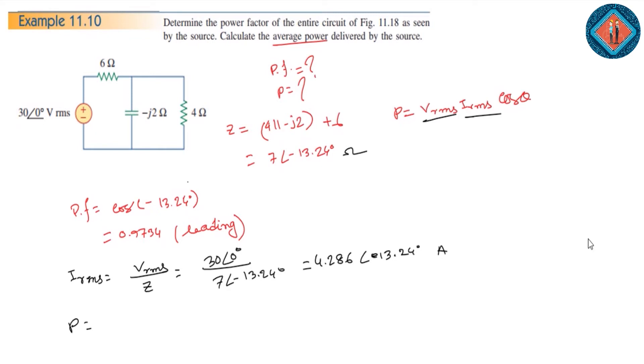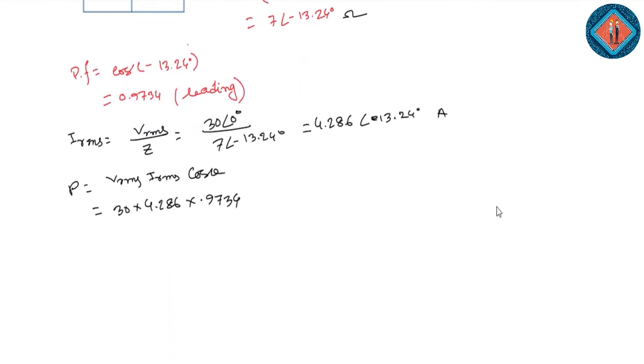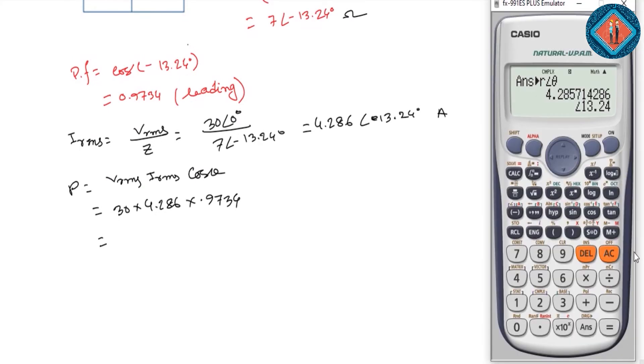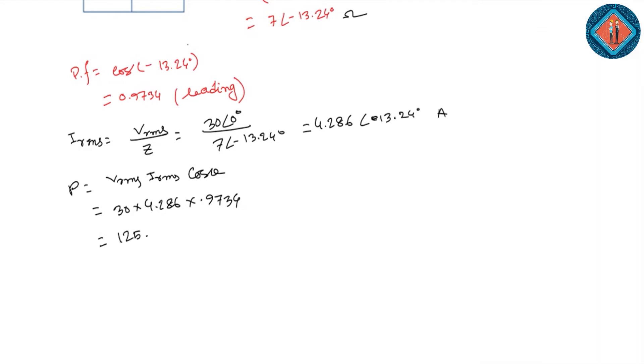For average power, P equals V_rms times I_rms times cos theta. That's 30 times 4.286 times 0.9734, which equals 125.56 watts.